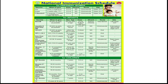For children: DPT booster first dose — Diphtheria, Pertussis, Tetanus — is given at 16 to 24 months, up to 7 years of age. Dose is 0.5 ml, intramuscular, left thigh. Measles second dose is given at 16 to 24 months, up to 5 years of age, same dose and site. OPV booster dose is also given at 16 to 24 months, up to 5 years of age — 2 drops, oral route.